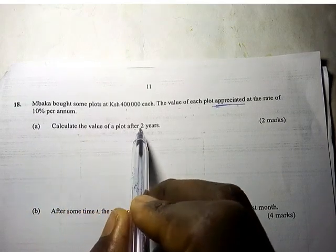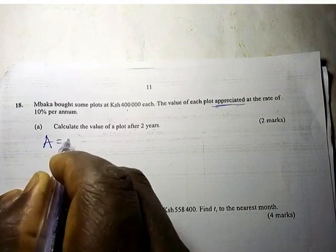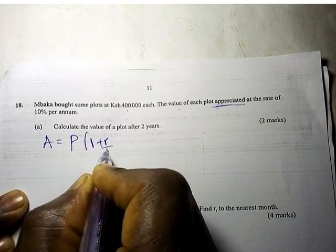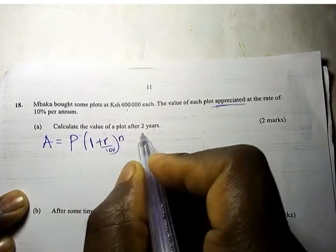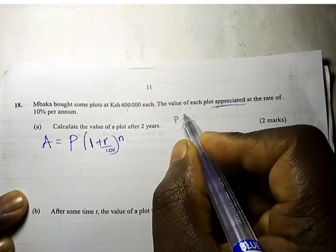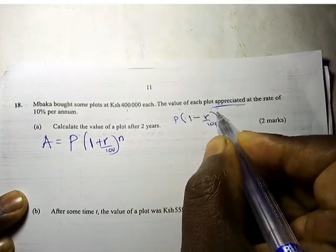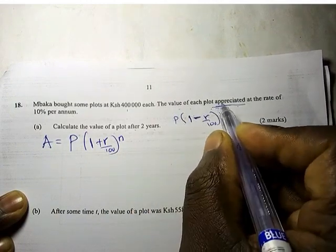Calculate the value of a plot after 2 years. To appreciate, we use amount equals principal times 1 plus R over 100 raised to power N. For depreciation, you use principal times 1 minus R over 100. If it's appreciation, you use this formula with plus.